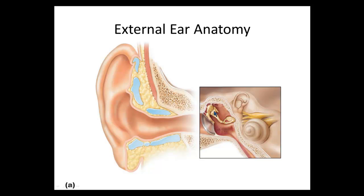The malleus, incus, and stapes are found inside the tympanic cavity. There is also a tube that drains the middle ear called the eustachian tube or auditory tube. Every time you swallow, you can hear a clicking in your ears because of pressure differences being transferred up this eustachian tube to the middle ear.